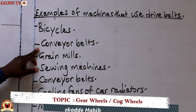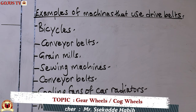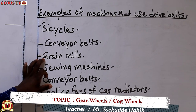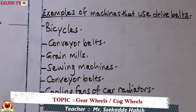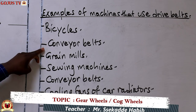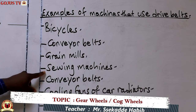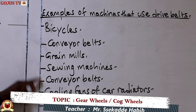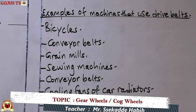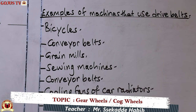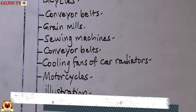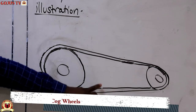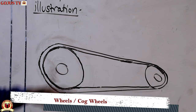Examples of machines that use drive belts include: conveyor belts found in factories like bottling companies, where bottles sit on a moving belt; grain mills; sewing machines, which also have wheels connected with belts; cooling fans of car radiators; and motorcycles. Looking at the diagram, you can see the drive belt and the two wheels — these wheels move in the same direction because they are connected with the belt.